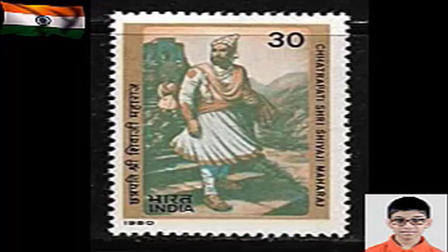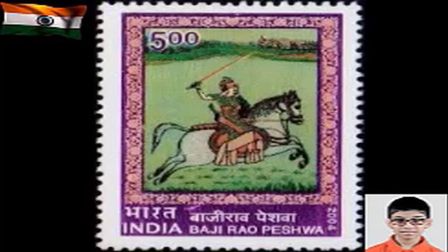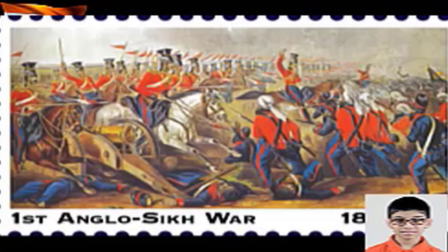The company subsequently seized control over the regions ruled by the Maratha Empire after defeating them in a series of wars. The Punjab was annexed in 1849 after the defeat of Sikh armies in the Anglo-Sikh Wars. Kerala Varma Pasi Raja was one of the earliest freedom fighters in India.